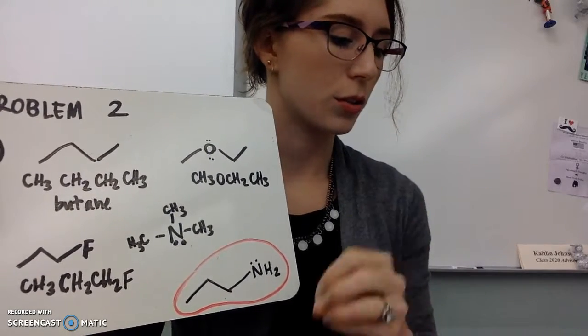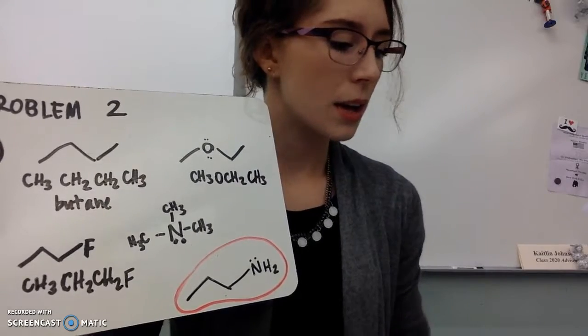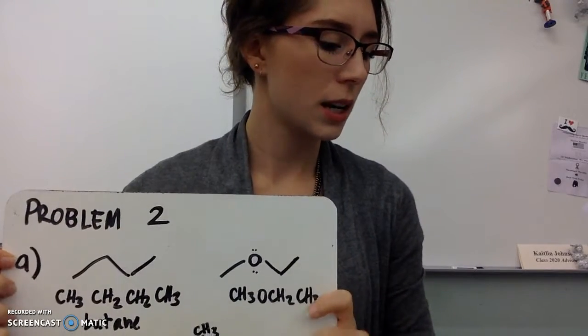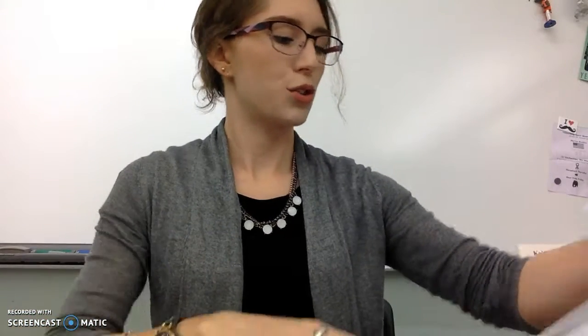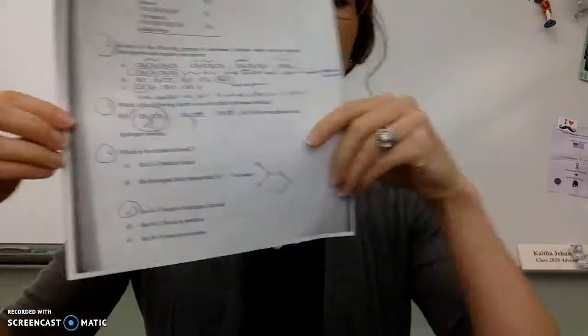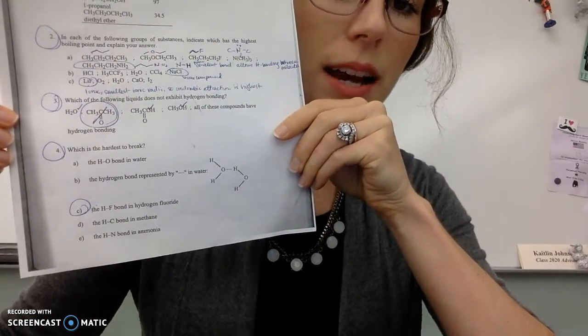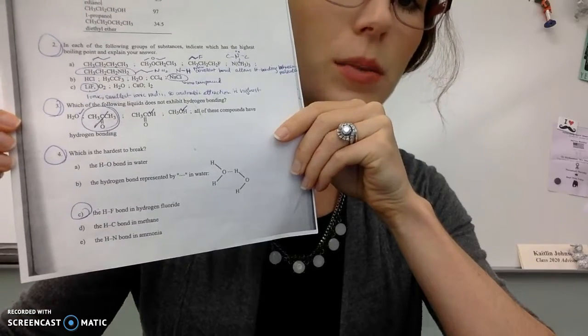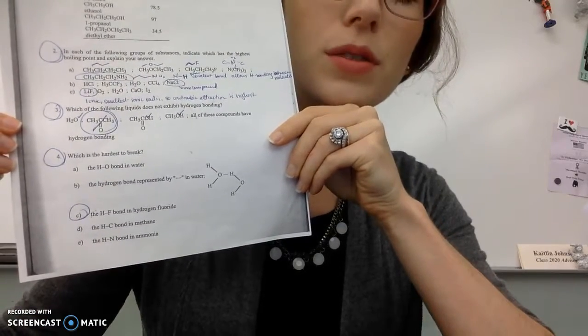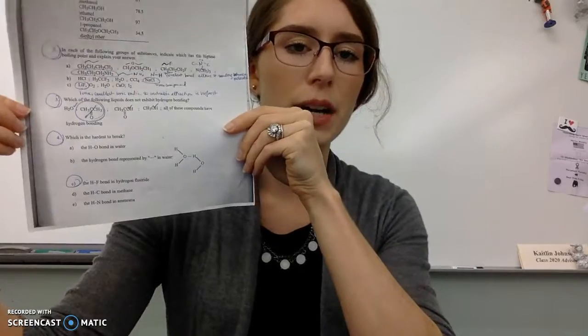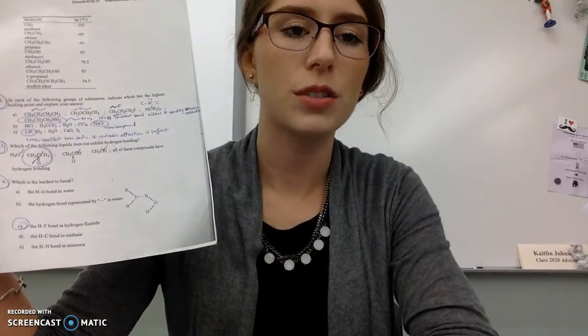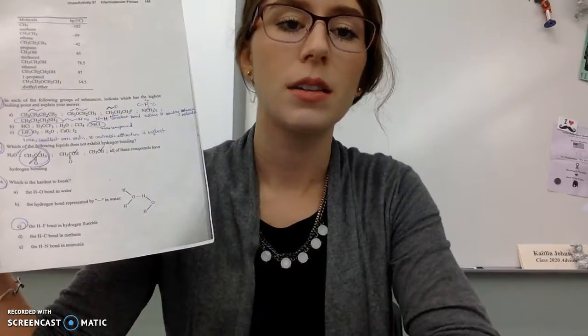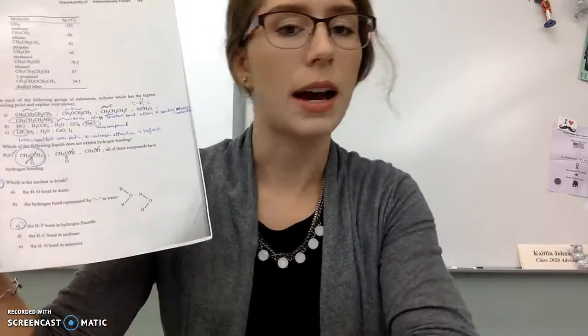That's actually 2-propanone. So we have three carbons in the backbone. The ketone functional group is on the second carbon. Number four says, which is the hardest to break? And you have five different answer choices here. The answer to number four is C. The HF bond in hydrogen fluoride is going to be the hardest to break. That's the most polar covalent bond out of those in the options here. And if you were to look up bond energies for some of these bonds, you would see that this does have the highest bond energy.